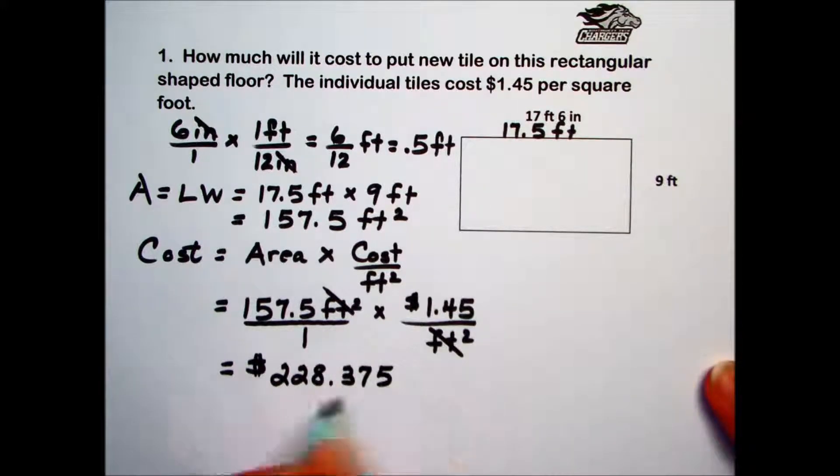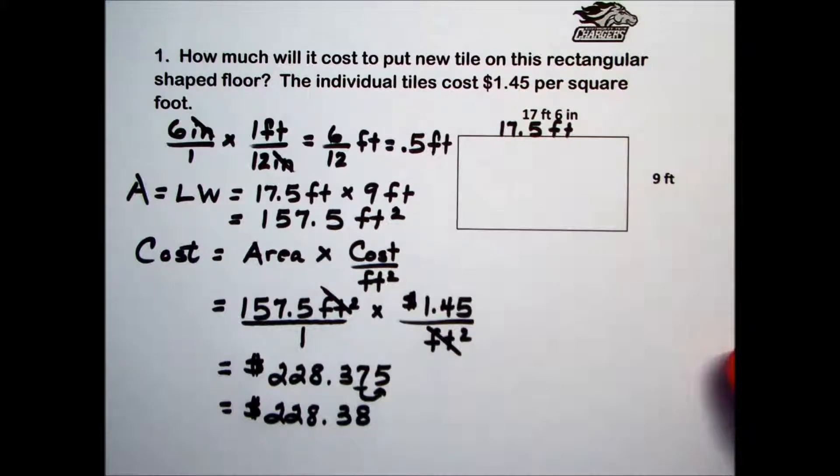Since this is money, we'll want to round it to the nearest cent, which is the hundreds place. The thousands place, we have a 5. Anytime it's 5 or greater, means we will increase that. Our final answer is $228.38.